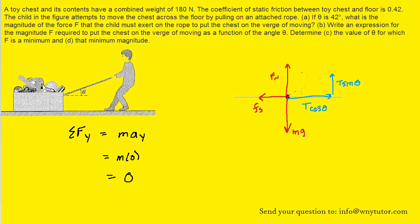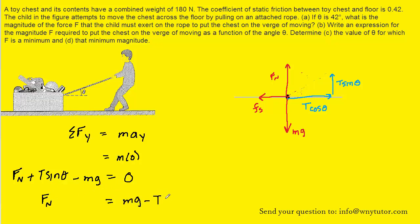For the left side, we need to sum up the forces. We have several forces in the y direction: T sine theta and fn, which are both positive because they're pointing in the upward or positive y direction. And then we have the downward gravitational force, which is negative. We can solve this equation for the normal force because it will serve us well later on. We would add mg over to the other side and then subtract T sine theta.